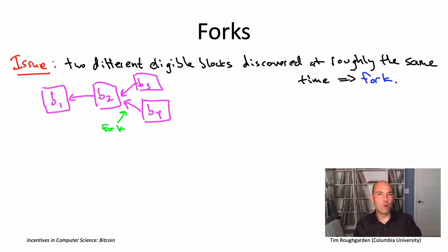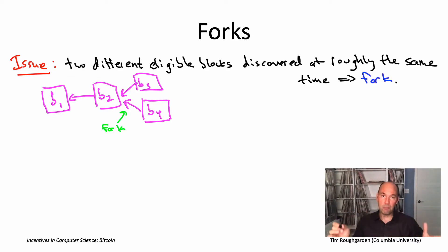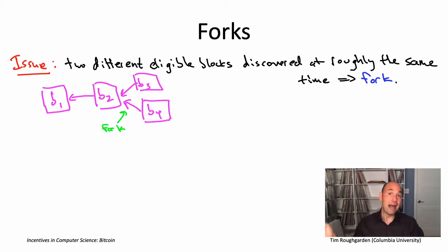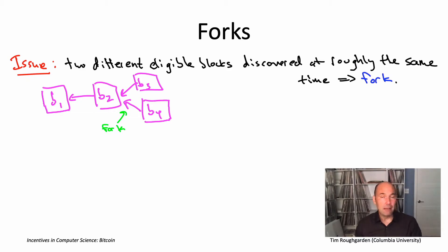Satoshi Nakamoto anticipated forks, and it's written in the Bitcoin protocol how to deal with them: you're supposed to regard the longest chain of blocks as the valid, authorized transactions. If there's a tie, you break ties according to whichever block you heard about first. So if you heard about B3 before B4, you as a miner would try to extend B3. Totally possible that another miner heard B4 first and is trying to extend B4 — so temporarily there's still ambiguity about where the end of the blockchain is.